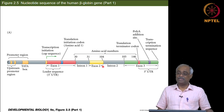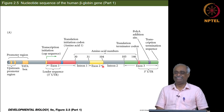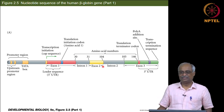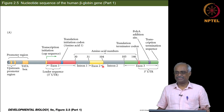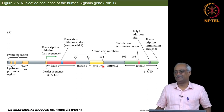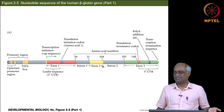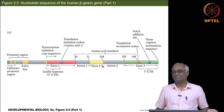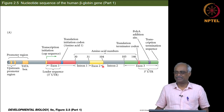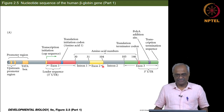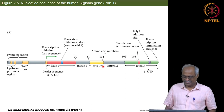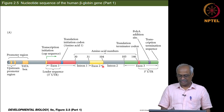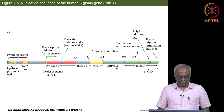It can be either. The 5 prime UTR can very well be starting at the transcription start site, so it can be in the exon too. We will do more quizzes later on this, but right now we will continue.